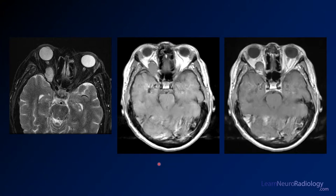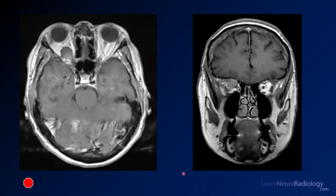Here's an MRI through kind of the same level — this is a T2 through the orbits, this is a T1, and there's a T1 post-contrast here. We also see a couple of post-contrast images: axial and coronal, both through the lesion.